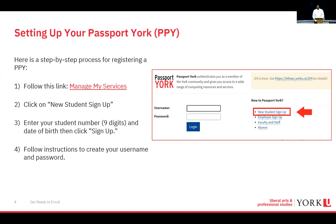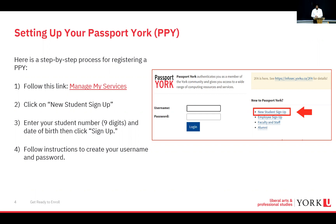You'll see here on the right-hand side of your screen a screenshot of what it looks like when you click on the link called 'Manage My Services.' When you click that link you'll go to the New Student Sign Up section in the red box. It'll then prompt you for your nine-digit student account number, which would have been emailed to you when you applied and accepted your offer. You can also go to MyFile to pull that information, then click Sign Up and follow the instructions.